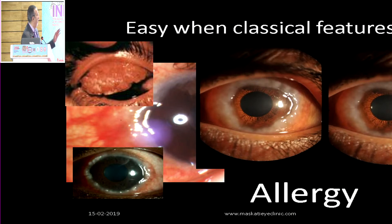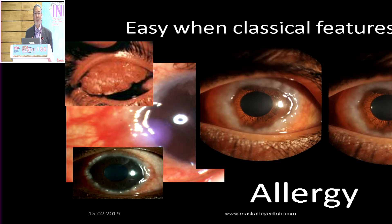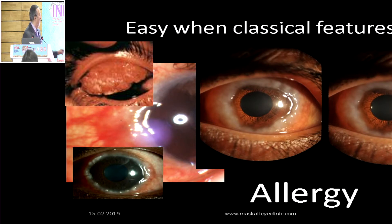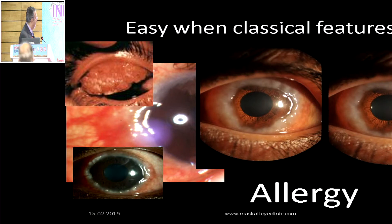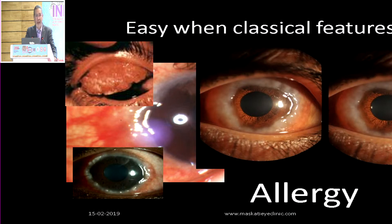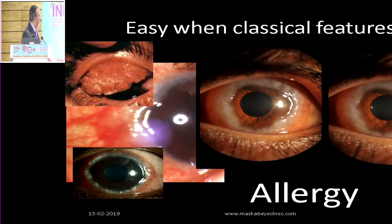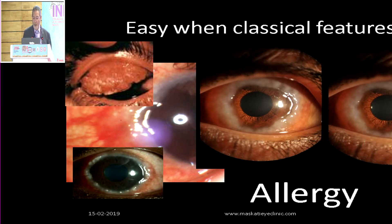When there are classical features of allergy — large papillae on the bulbar conjunctiva, on the palpebral conjunctiva, Trantas dots — there is no confusion. You don't need a slit lamp, you don't need anything else. Patient complains of itching, you look and he has got this picture or a shield ulcer, and you evert the lid and have papillae there — you treat the patient for allergy.